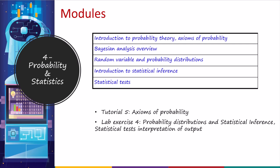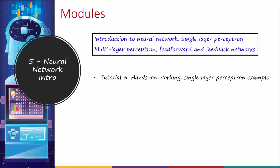In the next module, we'll talk about probability and statistics — the axioms of probability, a quick overview of Bayesian analysis, introduction to statistical inference and statistical tests. After covering these four modules on linear algebra, calculus, and probability theory, we will briefly talk about a neural network.